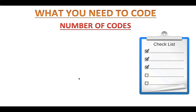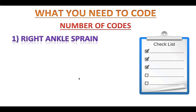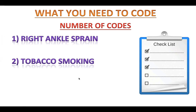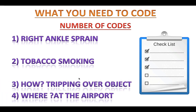Now your job is to code this record. How many diagnosis codes would you assign? I'll give you 10 seconds to think. There is no procedure performed in this case — if the physician had applied a cast or splint to the ankle, I would assign a CPT code, but that's not the case here. So what do you need to code? First, the right ankle sprain. Then tobacco smoking. And because this is an injury-related condition, you also need to code the external cause codes — how and where it happened. So how many codes total? There are 4 codes total.